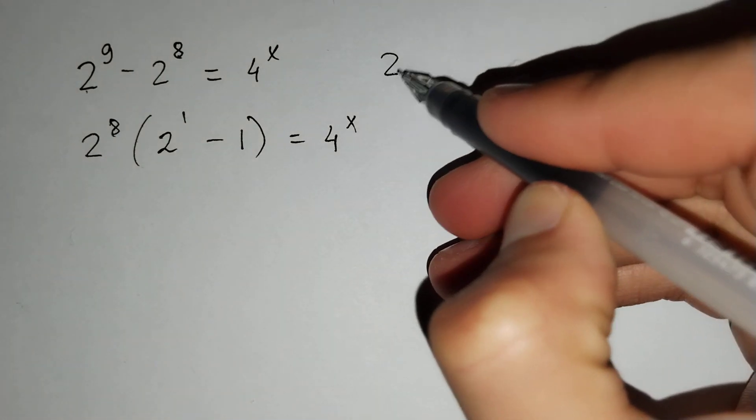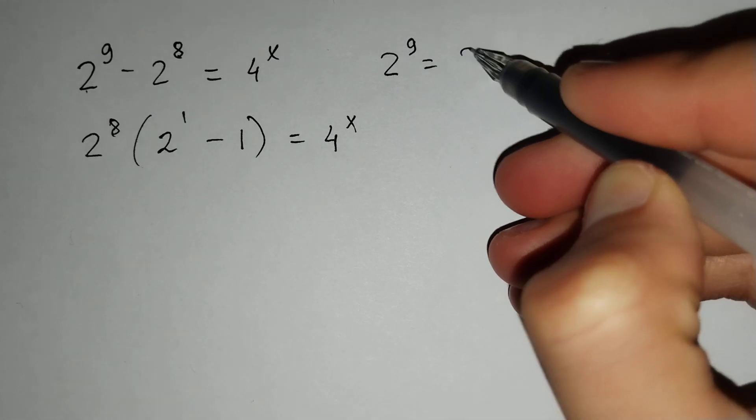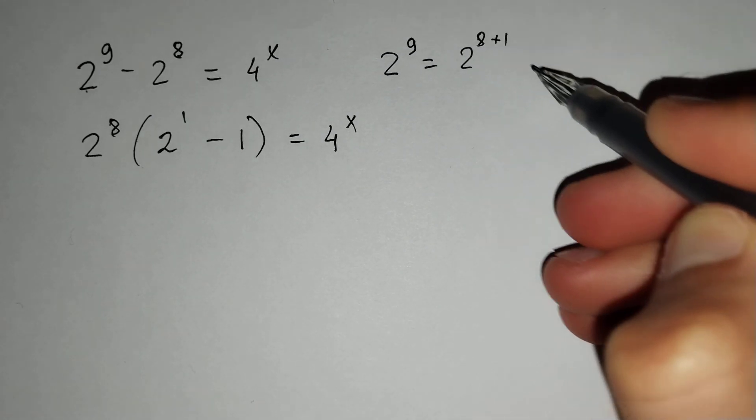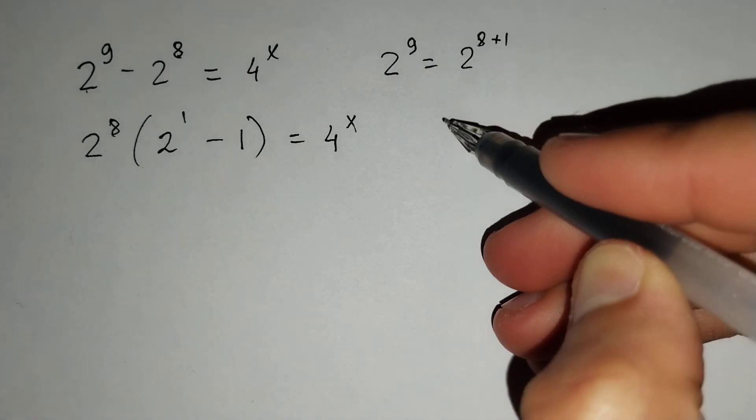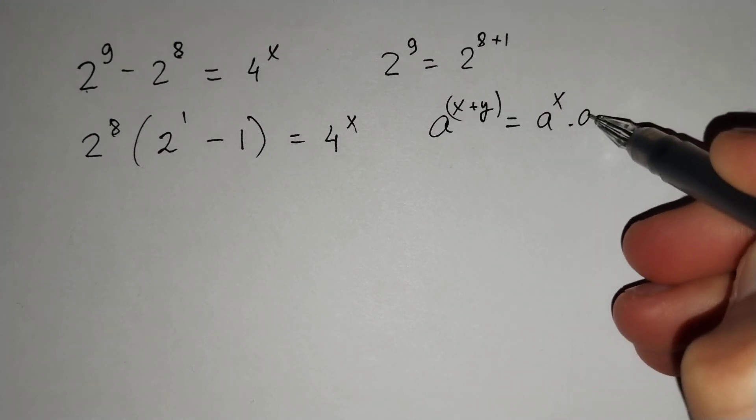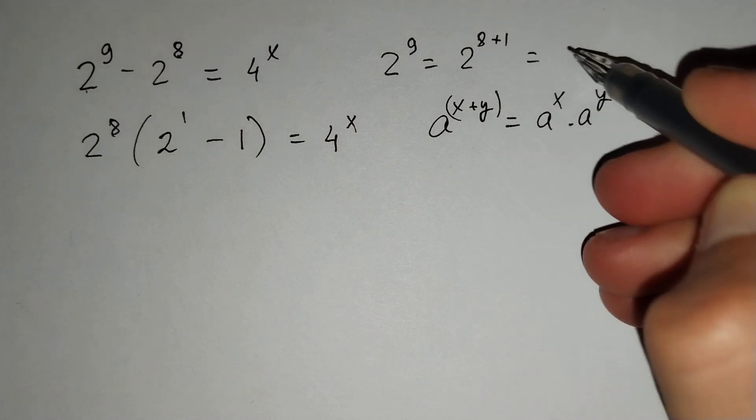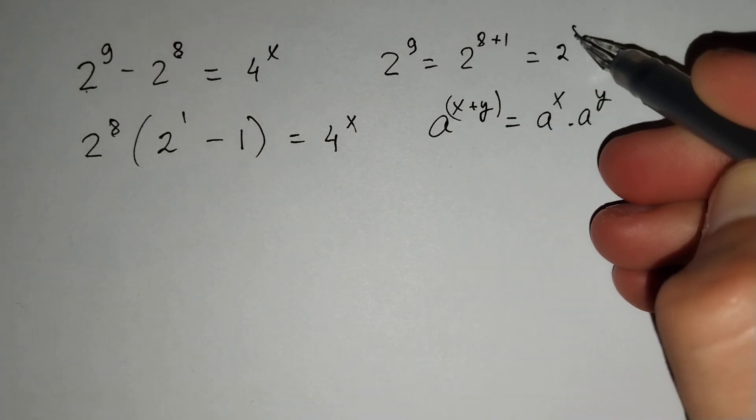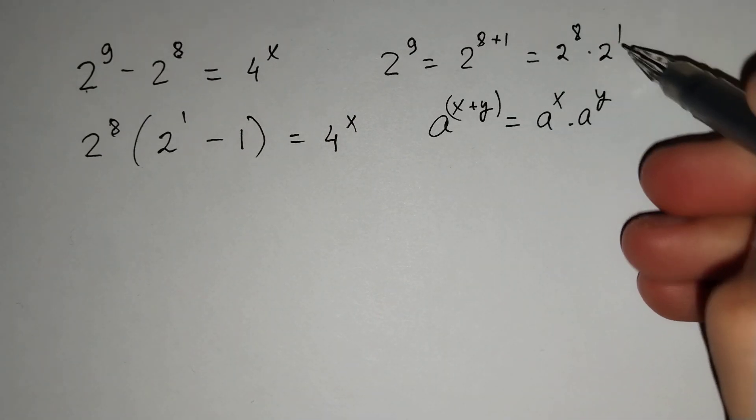2 power 9 equals 2 power 8 plus 1. And a power x plus y equals a power x times a power y. For this formula, this is equal to 2 power 8 times 2 power 1.